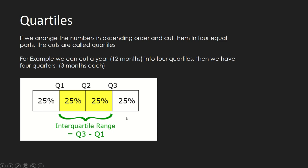Each of these equal distributions is called a quarter. The lines by which we divide the data are called quartiles — Q1, Q2, and Q3 are all quartiles. The middle portion, the two central 25% sections highlighted in yellow from Q1 to Q3, is called the interquartile range, or IQR.